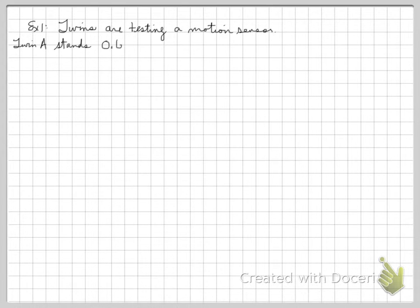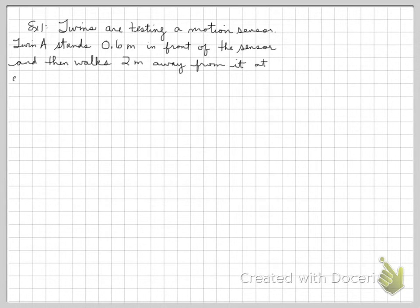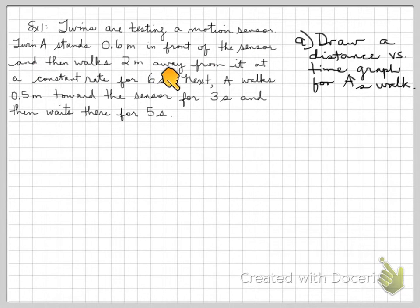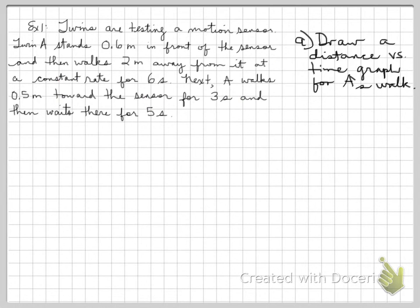Let's look at some other examples. What we're looking at here is twins testing a motion sensor. Twin A stands 0.6 meters in front of the sensor and walks away from it at a constant rate for 6 seconds. Next, A walks 2 meters away at a constant rate for 6 seconds, starting from 0.6 meters from the sensor. Then A walks 0.5 meters towards the sensor for 3 seconds at a constant rate, and then waits there for 5 seconds. Draw a distance versus time graph for A's walk.